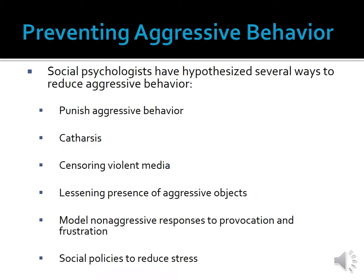Most social psychologists are interested in studying aggressive behavior because they are interested in reducing aggression in society. Aggressive behavior can lead to many negative effects for individuals and groups — from a broken nose incurred from a bar fight to the killing of an entire group of people. Given what social psychologists know about aggressive behavior, they use this knowledge to hypothesize several ways we can perhaps reduce aggressive behavior in society: punishing aggressive behavior, catharsis, censoring violent media, lessening the presence of aggressive objects, modeling non-aggressive responses to provocation and frustration, and social policies to reduce stress.